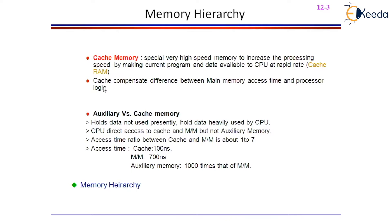When it comes to cache memory, it compensates the difference between main memory access and CPU processor logic. Let us have a small comparison between auxiliary memory versus cache memory. When it comes to auxiliary memory, the auxiliary memory is going to store all the programs at a stretch. Because at any point in time, the number of programs you're going to have will definitely be more than the size of the main memory. For that reason, we need a bigger storage area to initially store the programs — not to execute them.